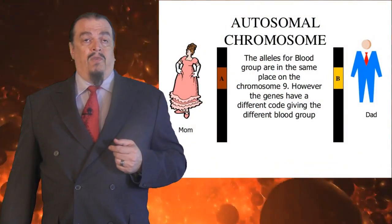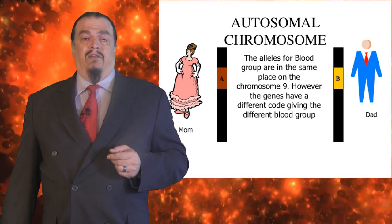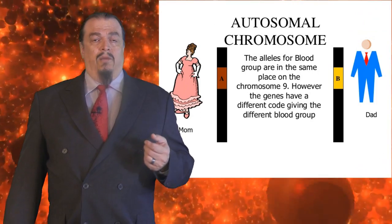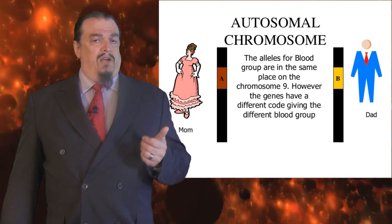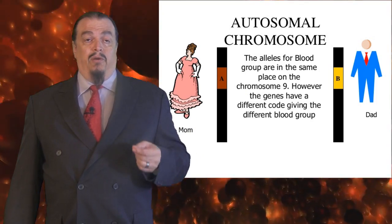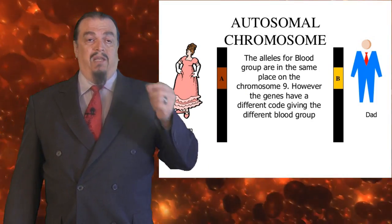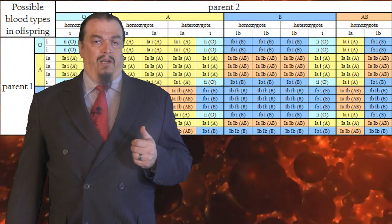We talked about one trait in the last video that is located on just one gene but actually has more than two alleles for the same trait: blood type. The point is that blood type would not have been as simple to predict with Mendelian inheritance. These two parents both have dominant alleles — A and B are both dominant. The offspring will inherit both dominant alleles equally as the AB blood type. They are what they call co-dominant. But blood type is even more complicated than that because it also has a third recessive allele: the O allele.